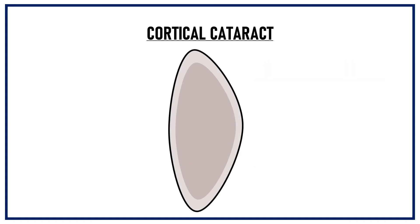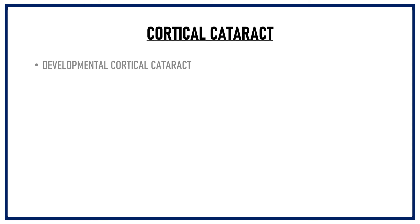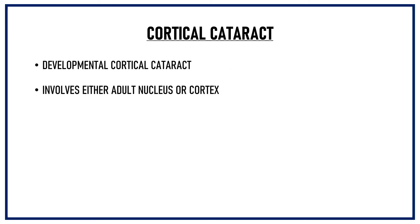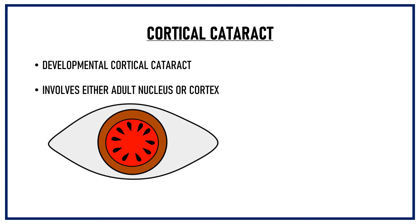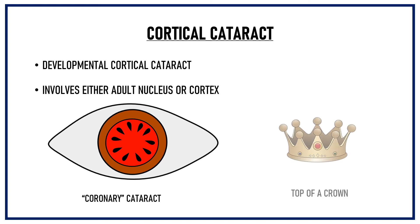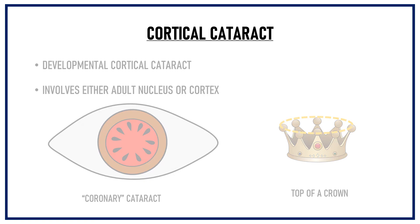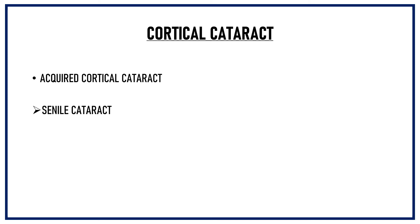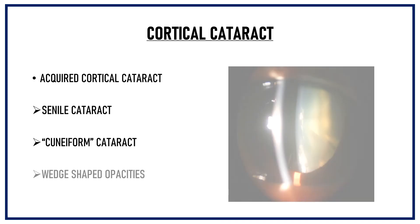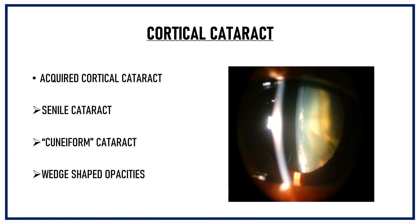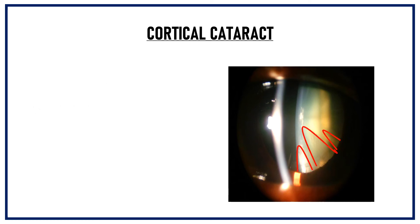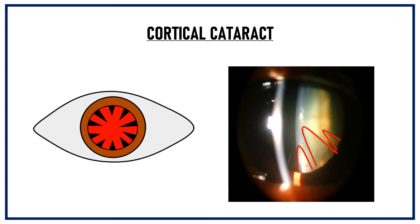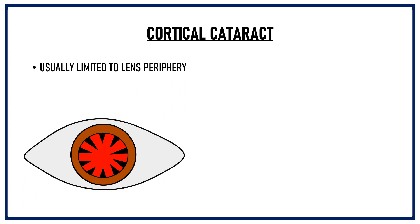Cortical cataract develops when the lens cortex develops opacities. It can be a developmental cataract that involves either the adult nucleus or the cortex. It appears as small, oval, discrete, club-shaped opacities arranged in a radial pattern around the nucleus. This arrangement has given it the name coronary cataract, because it resembles the top of a crown. Acquired cortical cataract is very commonly seen in senile cataract, where it is known as cuneiform cataract — consisting of wedge-shaped opacities extending from the periphery of the lens towards the center. These wedge-shaped opacities can be seen on distant direct ophthalmoscopy. Cortical cataract is usually limited to the periphery of the lens and it rarely affects vision.